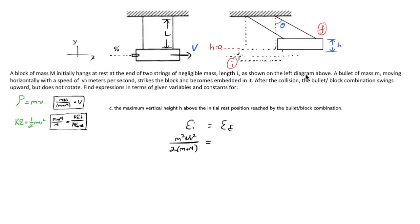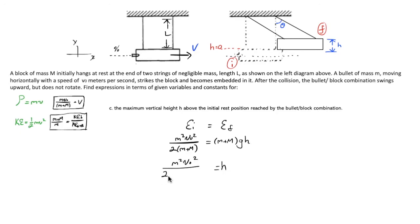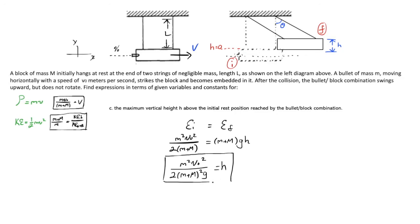That initial kinetic energy must equal the potential energy at the top, which is (m + M)·g·h. Dividing both sides by (m + M) and g, we find h = m²·v-naught² / [2g·(m + M)²]. This expression is in terms of all given variables, so it works as our answer for the maximum vertical height.